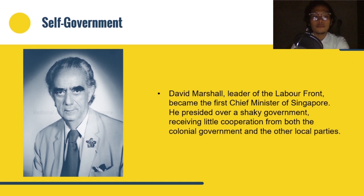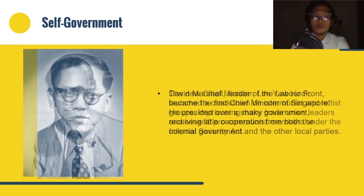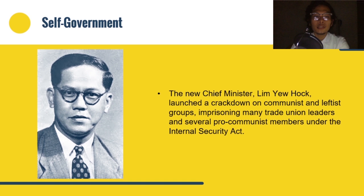Marshall resigned following the failure of the talks. The new Chief Minister Lim Yew Hock launched a crackdown on communist and leftist groups, imprisoning many trade union leaders and several pro-communist members under the Internal Security Act. The British government approved Lim's tough stance against communist agitators, and when a new round of talks was held beginning in March 1957, they agreed to grant complete internal self-government to Singapore.